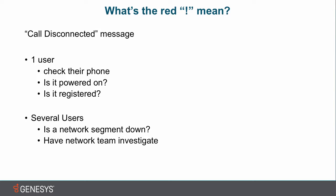If it is one user, the thing you want to do is actually have them or you check their phone, make sure it has power, and also make sure it's registered to the CIC server. If the CIC server can't communicate with that phone, you're going to see that red exclamation point as an indicator that connectivity for the phone call can't be made.